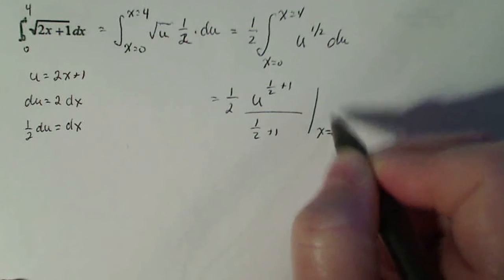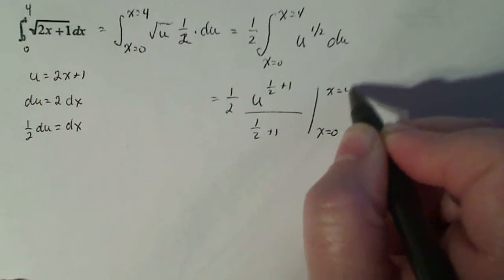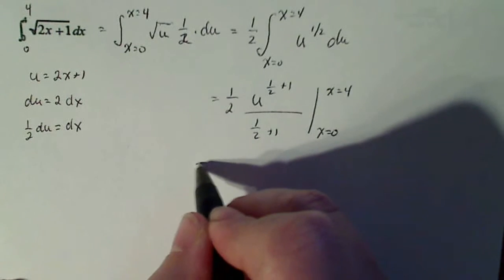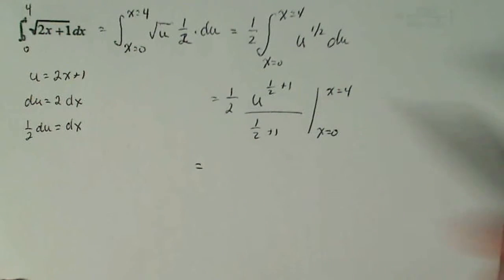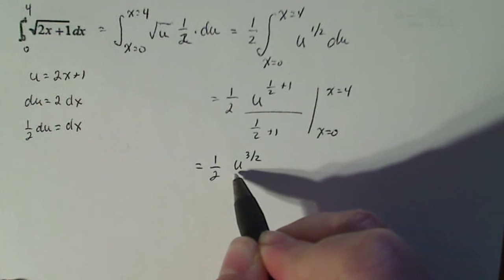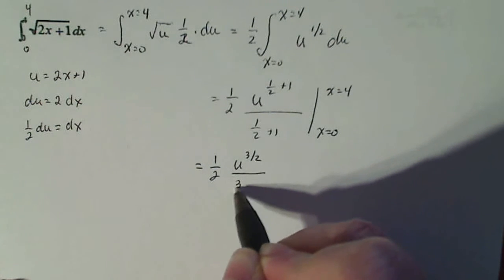Then x goes from 0 to 4. That's equal to, let's see, one half plus one is three halves. So it's gonna be one half u to the three halves over three halves.